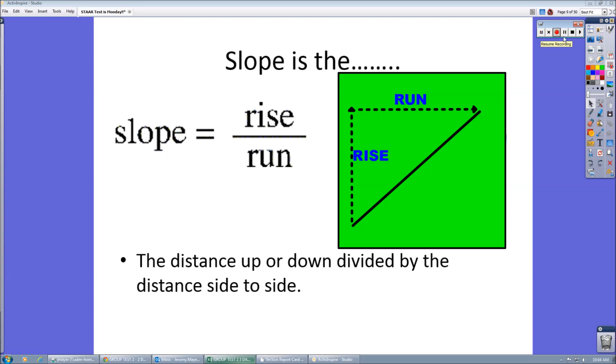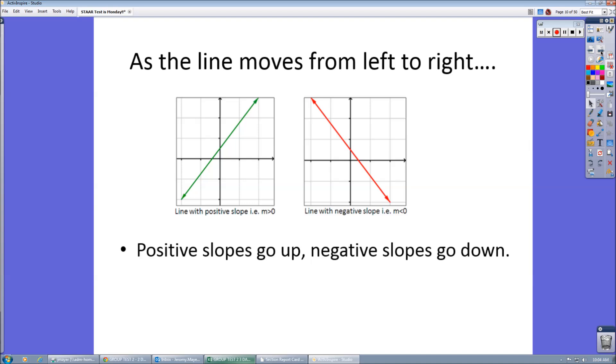Rise over run. You have to rise first and then always run to the right. You can rise or you can fall, but always run to the right. Don't run to the left. And you read your graph from left to right. You can see the green one is positive, the red one is negative.